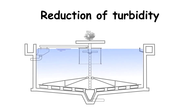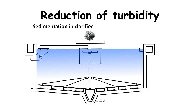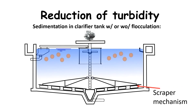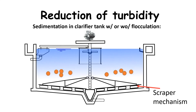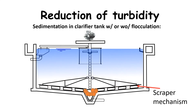Different technologies are available to reduce turbidity in water, but the most commonly used is sedimentation. As the particles are relatively large, they will settle down to the bottom over time, as long as there is no or very little motion in the water. To prevent motion or turbulence, water is therefore stored in a settling tank for several hours.